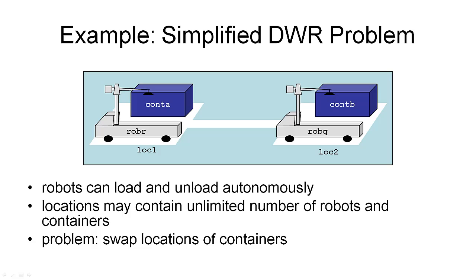Here is an example world state from our simplified DocWorker robot problem. In this state, we have only two locations — location one and location two — connected by a path, as shown in the image. The two robots are called R and Q, with R at location one and Q at location two initially. Both robots are currently unloaded, and there are two containers — container A and container B — at the two locations. Robots can load and unload containers autonomously, as each robot has its own personal crane attached. Locations are also big enough for multiple robots.